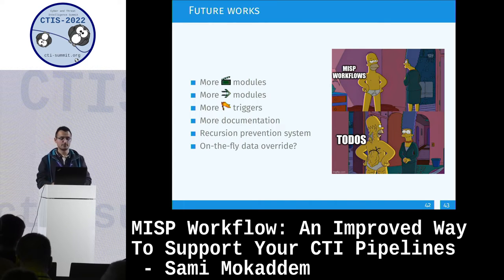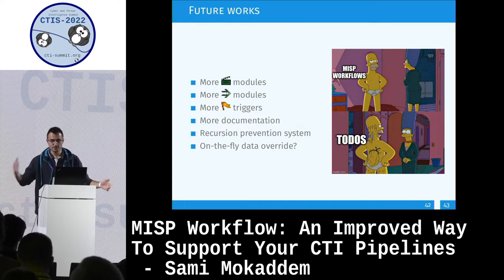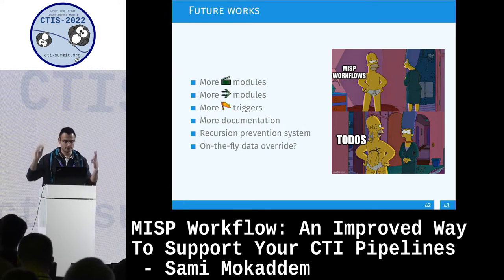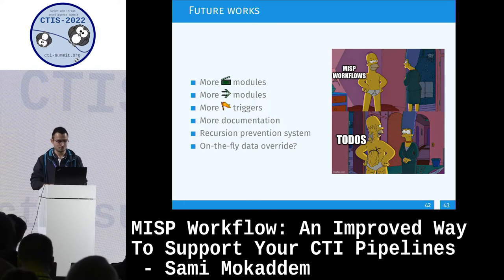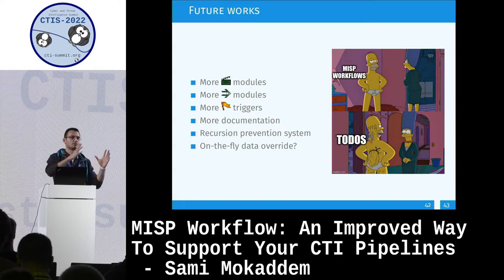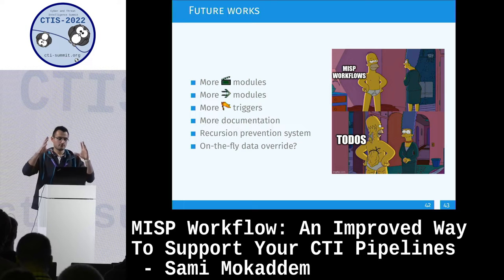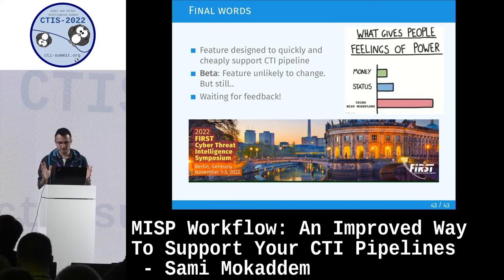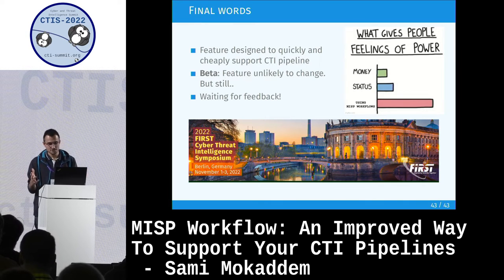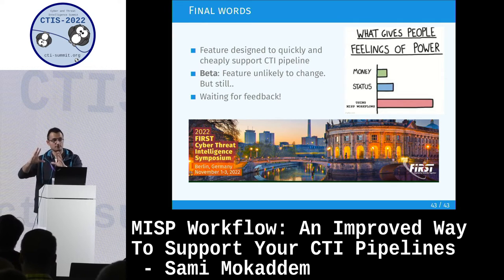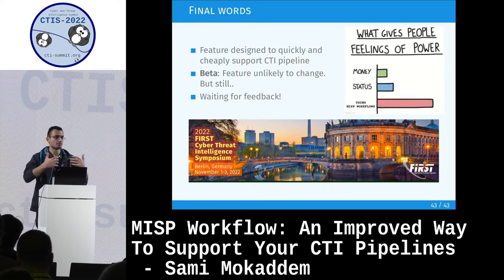Future work: more modules, more logic modules, even more triggers - last week we created two or three new triggers and the list keeps growing. More documentation, because we are really bad at documenting things. And on-the-fly data overrides - a means to modify data from module to module and save state immediately in the database. Final thoughts: if you already have a solid pipeline established, MISP workflows might not be as relevant, though you could extract parts for curation. It's most interesting for those setting up a new pipeline or curation process.